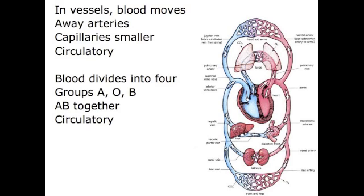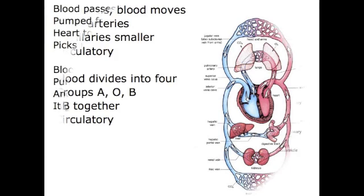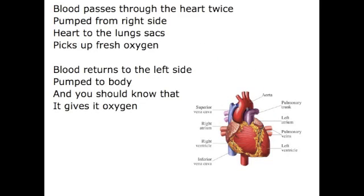Blood divides into four groups, they all be A-B together. So know the purposes to the heart — right home from my side, heart to the lung side. Fresh oxygen, blood turns to the left side, comes to the body — and you should know that it gives you oxygen.